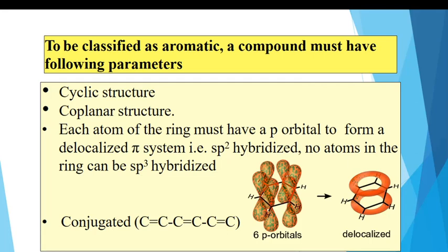To be classified as an aromatic compound, the compound must possess the following parameters. First, the cyclic compound must be coplanar. Second, the structure must be cyclic. Third, each atom of the ring must have a p orbital — this is a very important orbital present in heterocyclic compounds to form the delocalized pi system, meaning each atom must be sp2 hybridized; no atom in the ring can be sp3 hybridized.